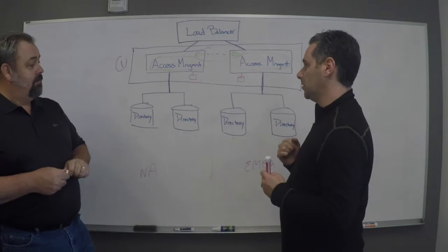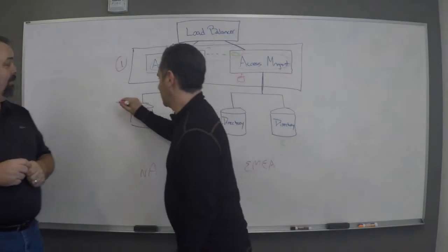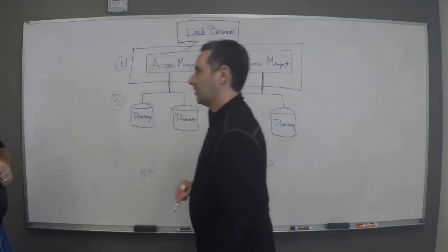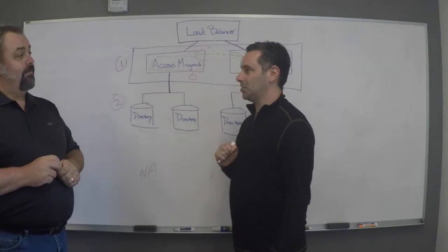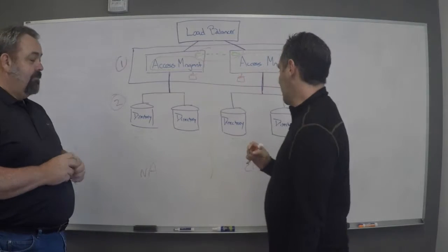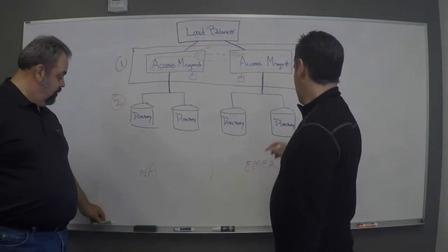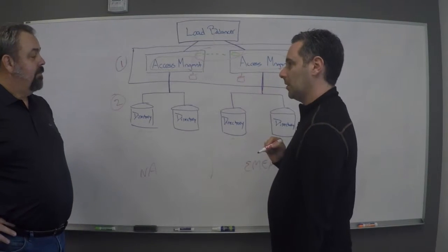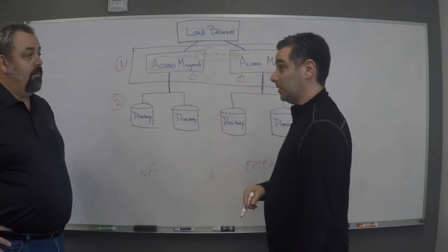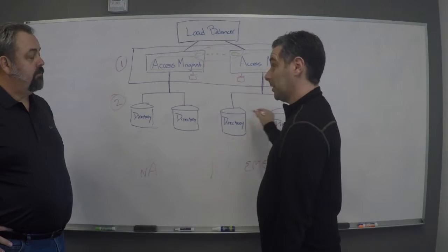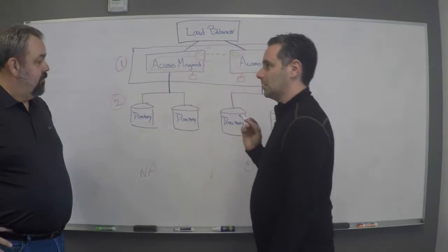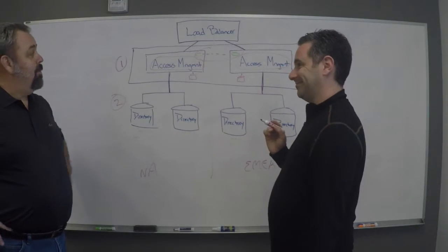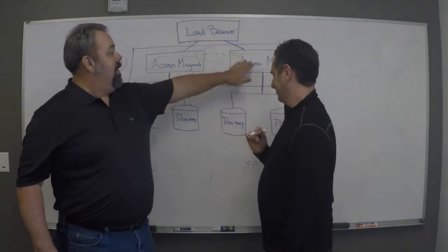So there's another important piece here, what I would call item two, and this is on data replication. Now I have identity data stored in my directory, and I not only want that high availability and redundancy, but I want to be able to replicate that directory data, the identity data, across continents.